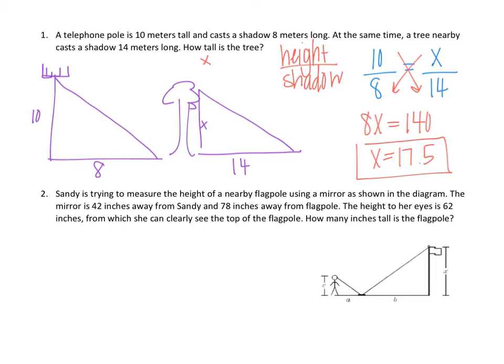Number two. Sandy is trying to measure the height of a nearby flagpole using a mirror as shown in the diagram. So our mirror is right here in the center, or not really the center, but it's that piece that's darker at the bottom. The mirror is 42 inches away from Sandy and 78 inches away from the flagpole. The height to her eyes is 62 inches. So from bottom to top is 62 inches just on her side there. From which she can clearly see the top of the flagpole. How many inches tall is the flagpole? We're looking for how tall the flagpole is, which we're going to call X.